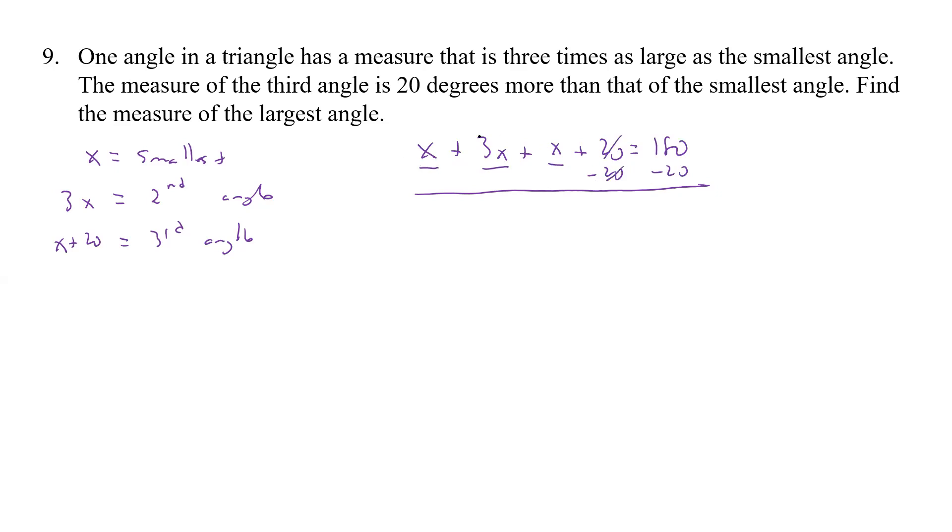So we have 1, 2, 3, 4, 5x equals, and that's going to be 1, 6, 0. So x is equal to, well, we should probably write the divide there. Divide by 5, divide by 5.